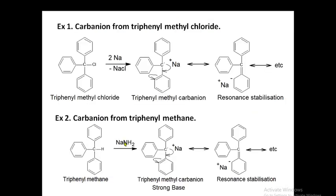Let's see the example: carbanion from triphenyl methyl chloride. Here is triphenyl methyl chloride reacting with sodium metal. It forms the triphenylmethyl carbanion. This carbanion is highly stable as it is attached to three phenyl rings and the negative charge is delocalized in the three phenyl rings through resonance stabilization. In this carbanion formation, Cl is removed and the bonding electron pair is left behind, forming the carbanion.